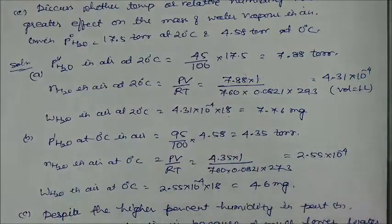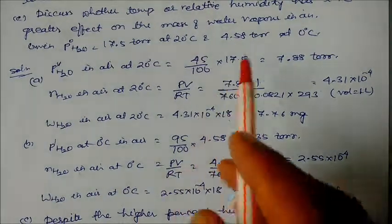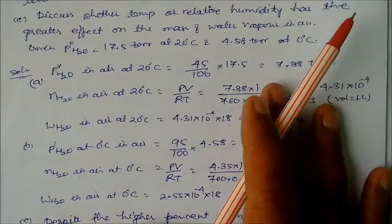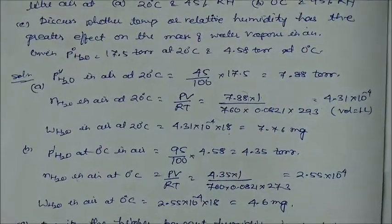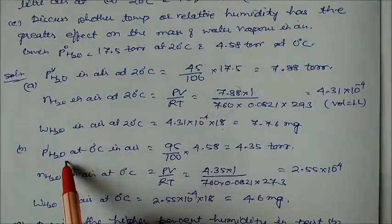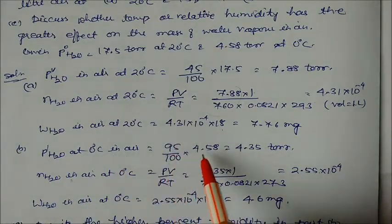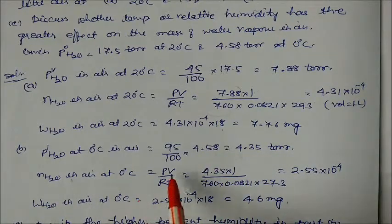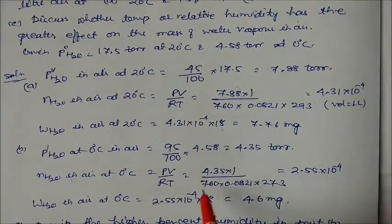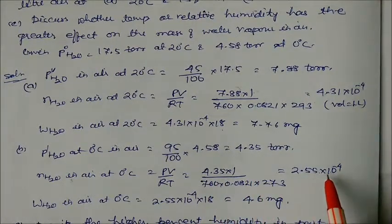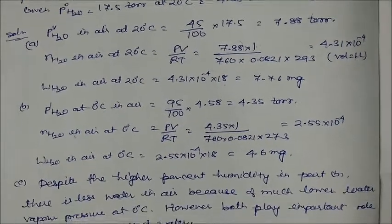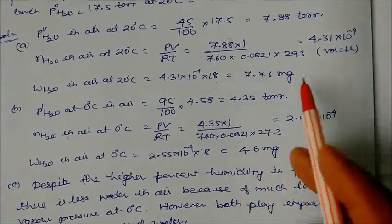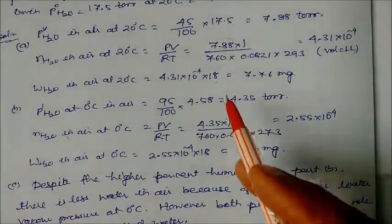At 0°C with RH = 95%: partial pressure of water = 95% × 4.58 torr. Using PV = nRT with V = 1 liter, we get 2.55 × 10⁻³ moles of water. The mass is approximately 4.6 milligrams. Comparing the two results, when temperature decreases the mass of water vapor also decreases.